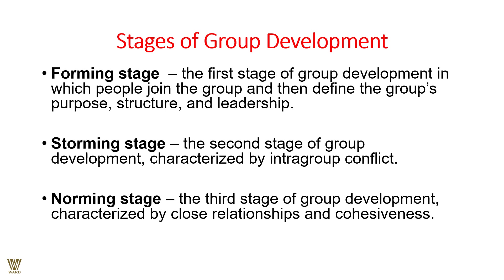So we talk about command groups, task groups, cross-functional groups, and self-managed teams. There are essentially five stages of group development: forming, storming, norming, performing, and adjourning. The forming stage is the first stage. In a formal group, every person is assigned a role. In an informal group, members come together with the need to find a solution to a common problem.